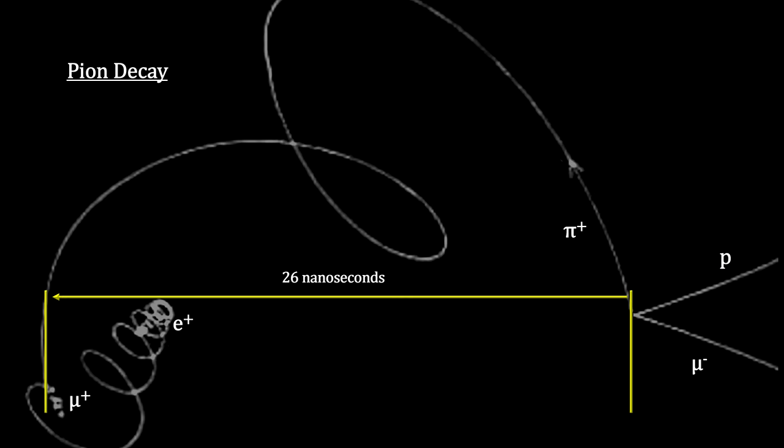It lasted only 26 nanoseconds. Now that is a very short life. The muon lasted almost a thousand times longer than that.